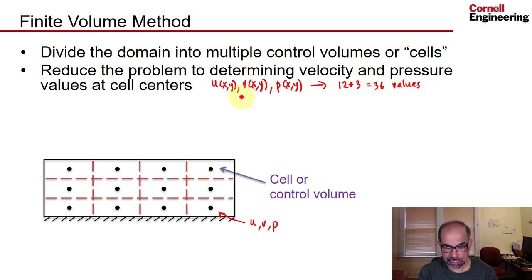Solving PDEs to find unknown functions is hard. Finding discrete values is not as hard if you have computers. And this idea of determining the primary unknowns only at selected points rather than everywhere in the domain is referred to as discretization, and it's a basis for most numerical methods.